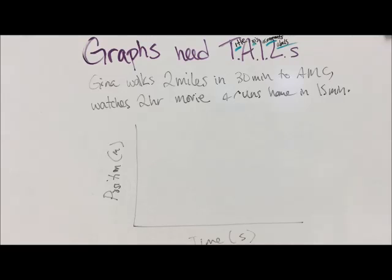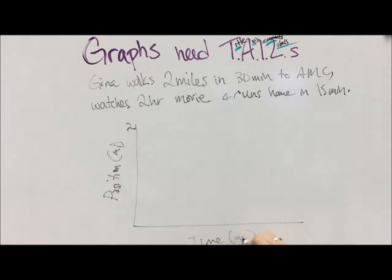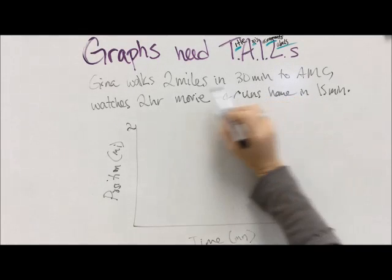So we're going to get our little graphy poo set up here. We got position on one side, time on the other. But you know what, we're not measuring position in meters, we're measuring it in miles. We need to make sure that looks right. And she's going to go two miles, and our time is in minutes too.